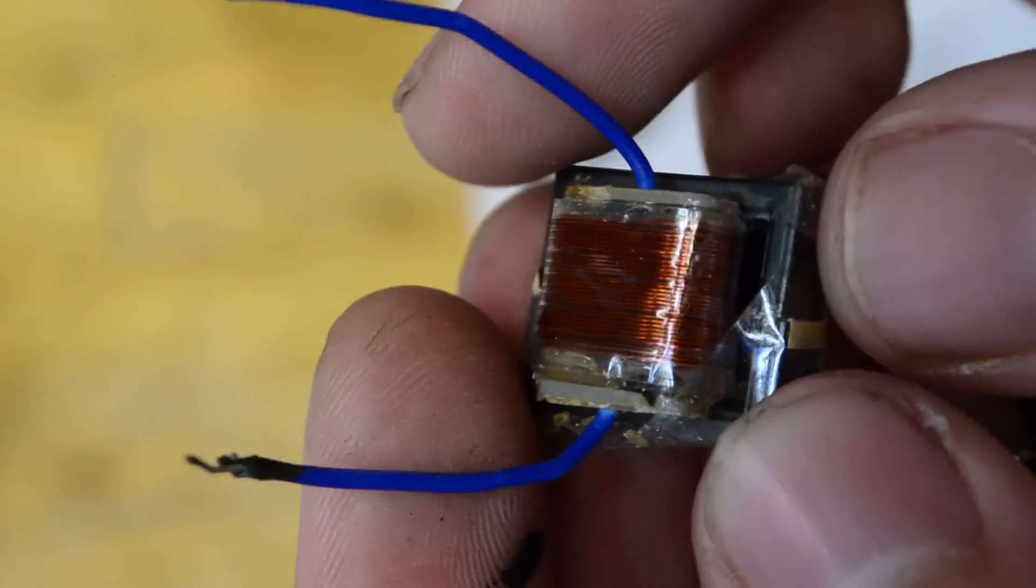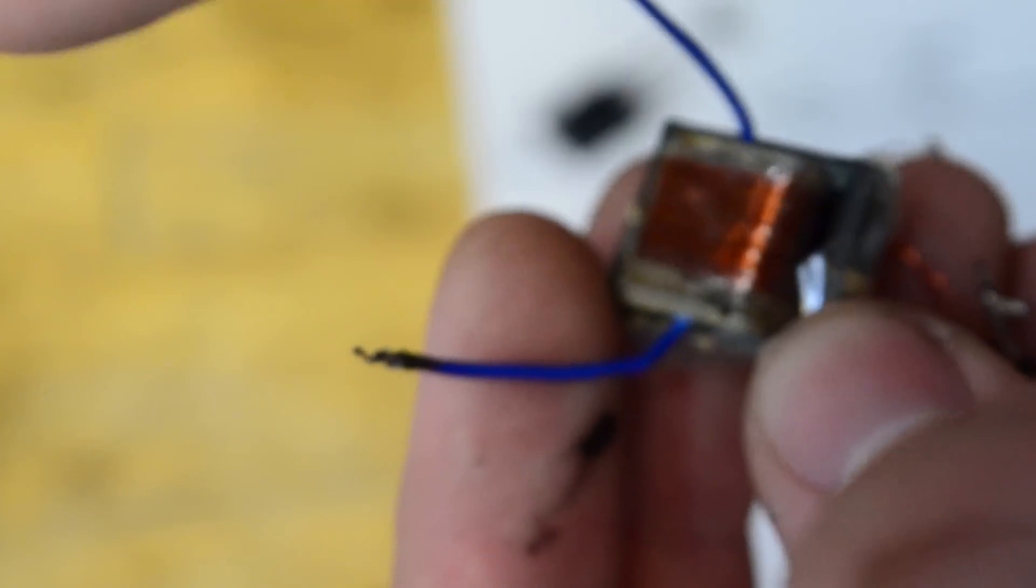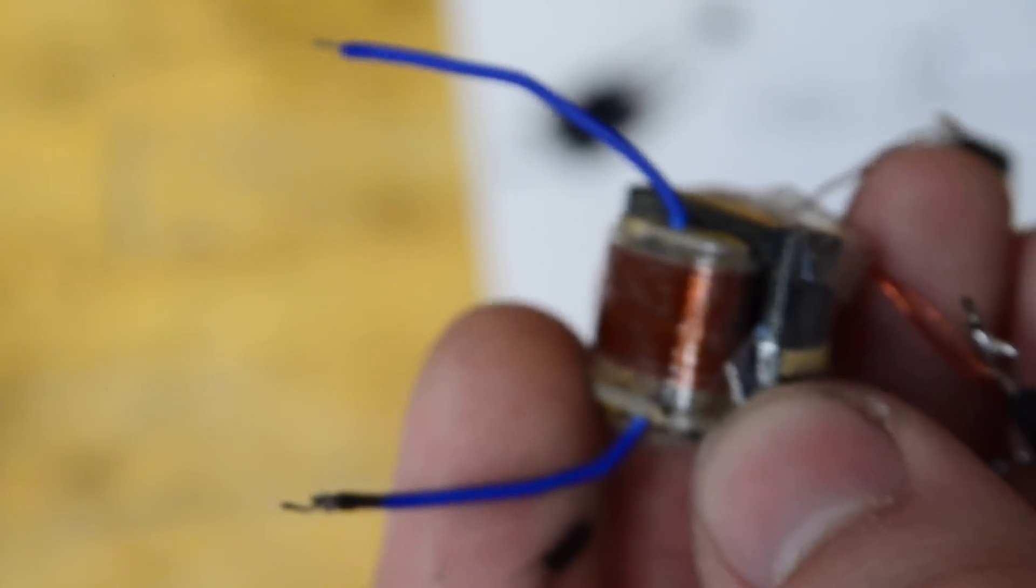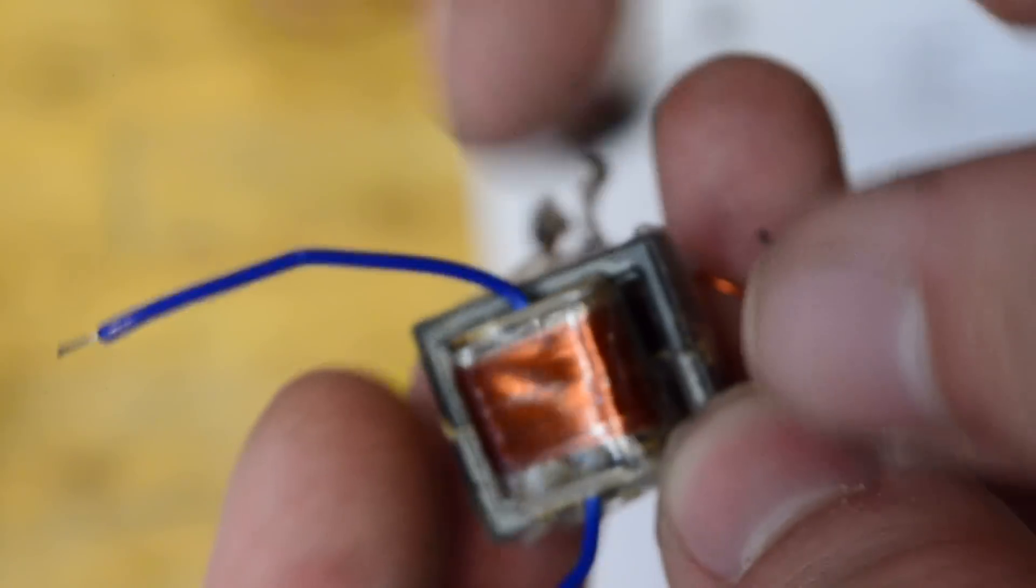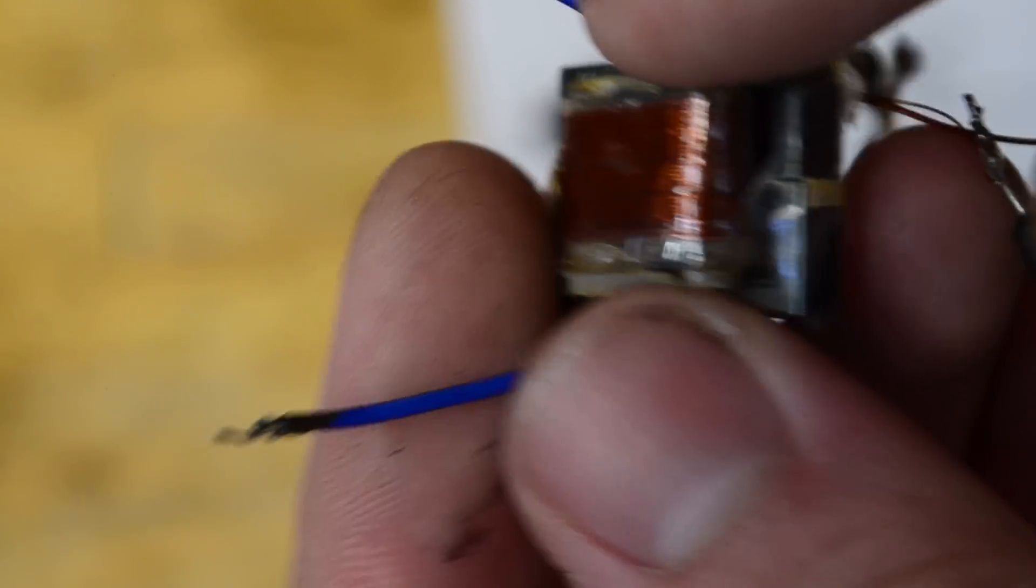If your transformer looks different, you can use an ohmmeter to test the resistance across the coils. The secondary coil, since it has the most turns, should be the most resistant. You'll get a higher reading on that one while the primary and feedback coils will have much lower resistances.